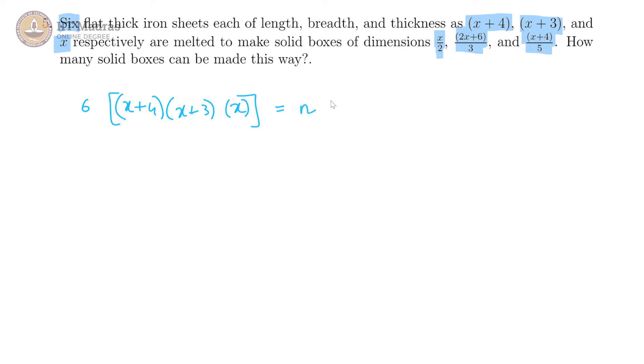Let us say there are n solid boxes and then the volume of each is x/2, (2x+6)/3, and (x+4)/5. Now this x and this x cancels, and this (x+4) and this numerator here cancels, and (2x+6) is (x+3) times 2.